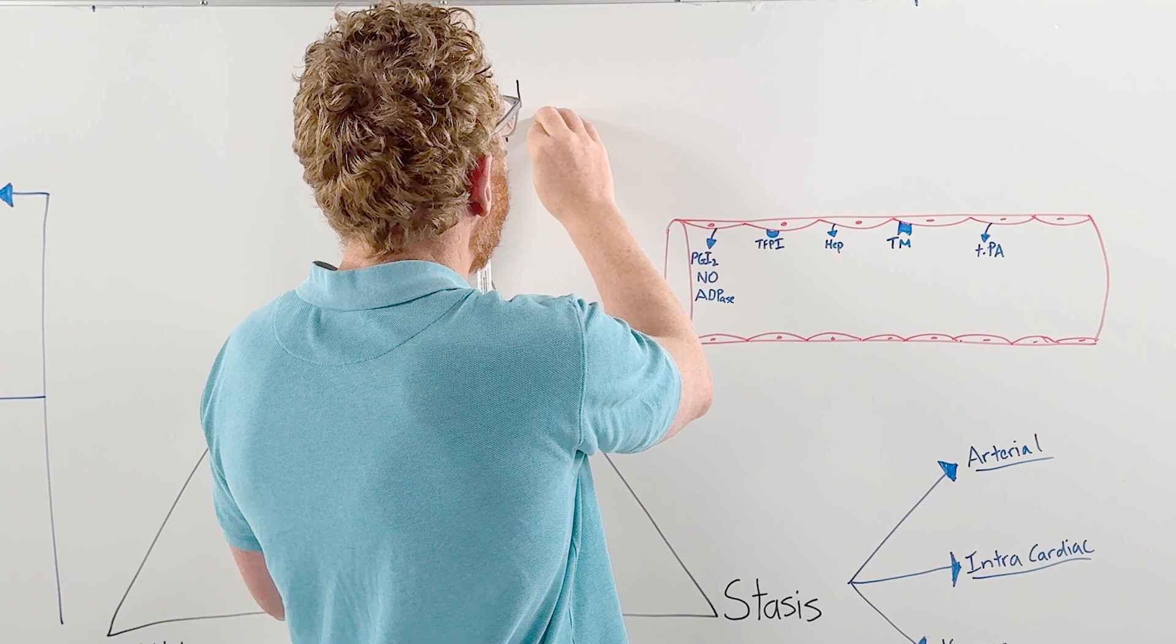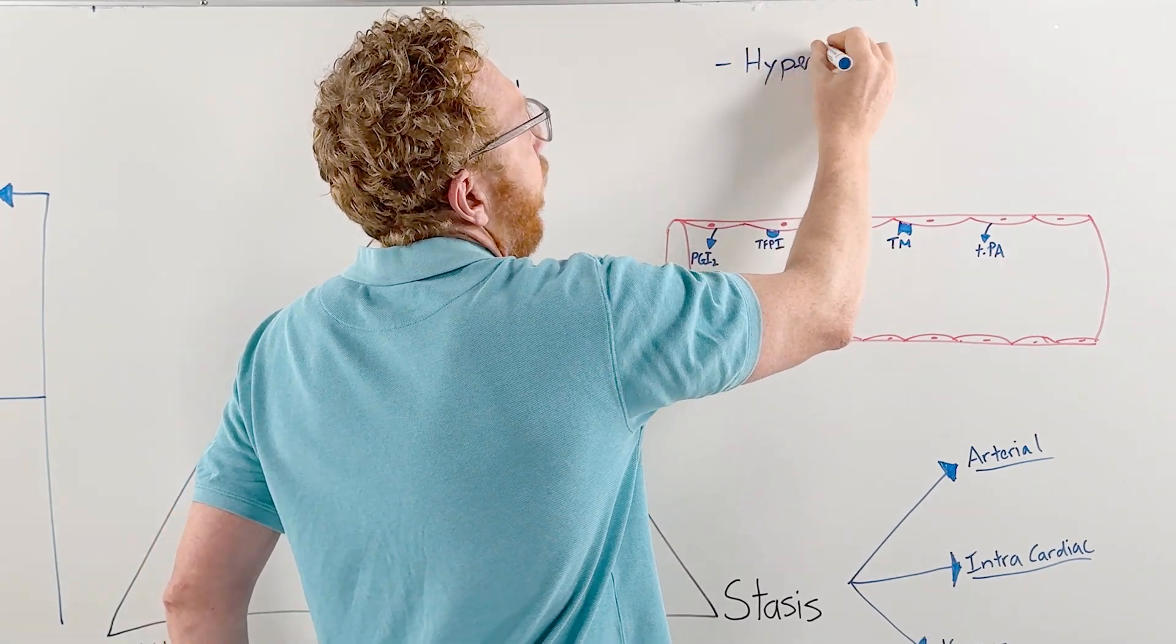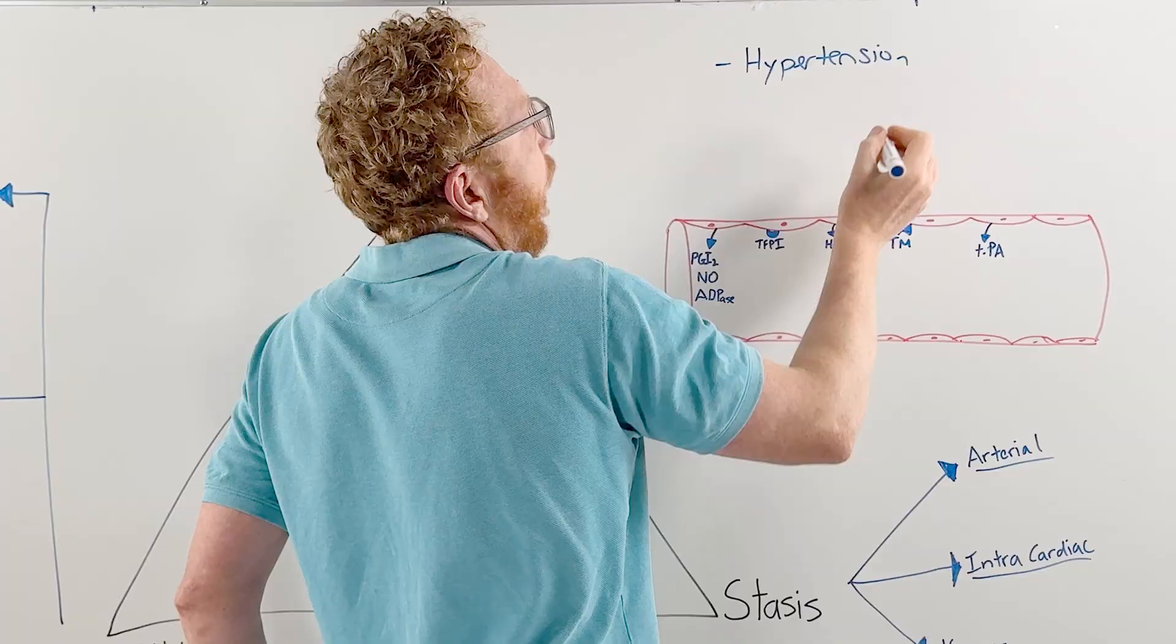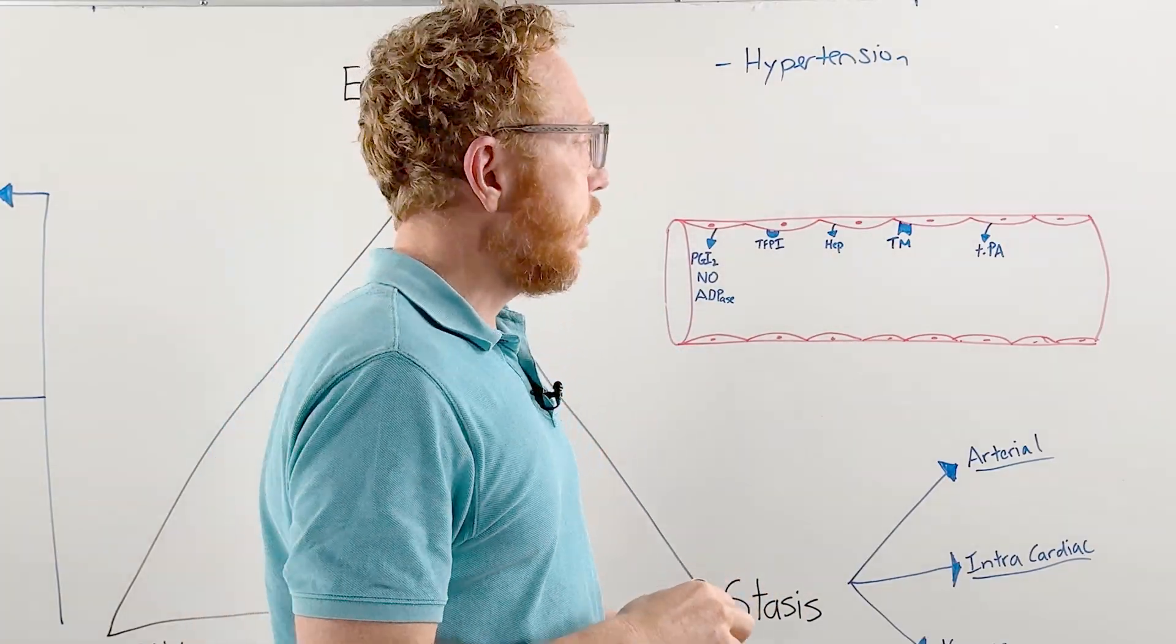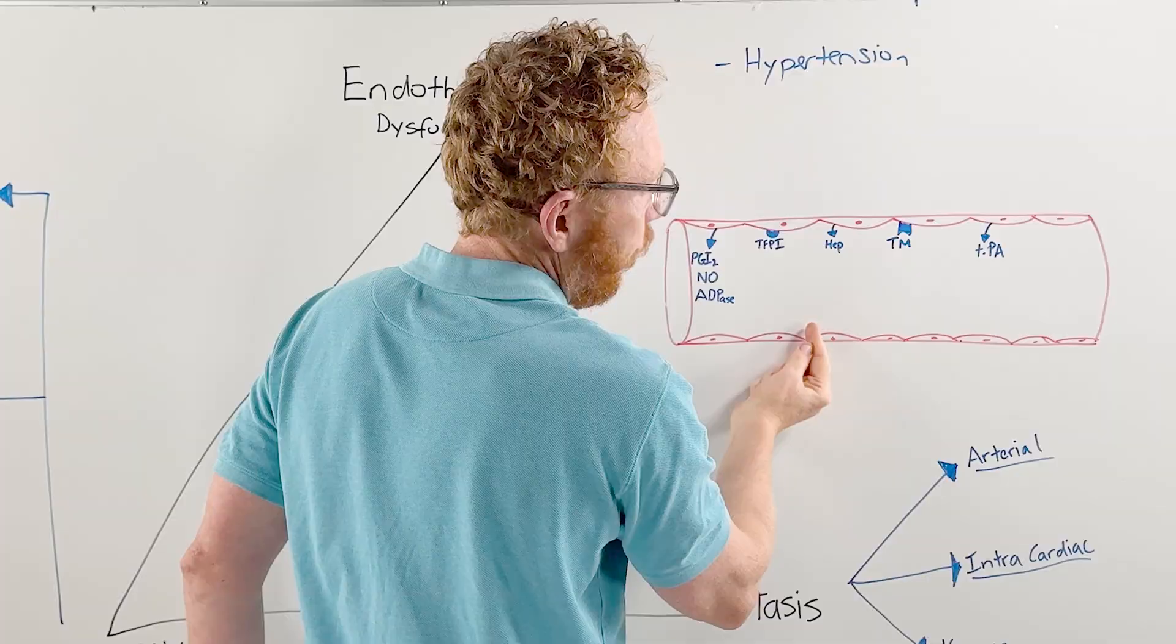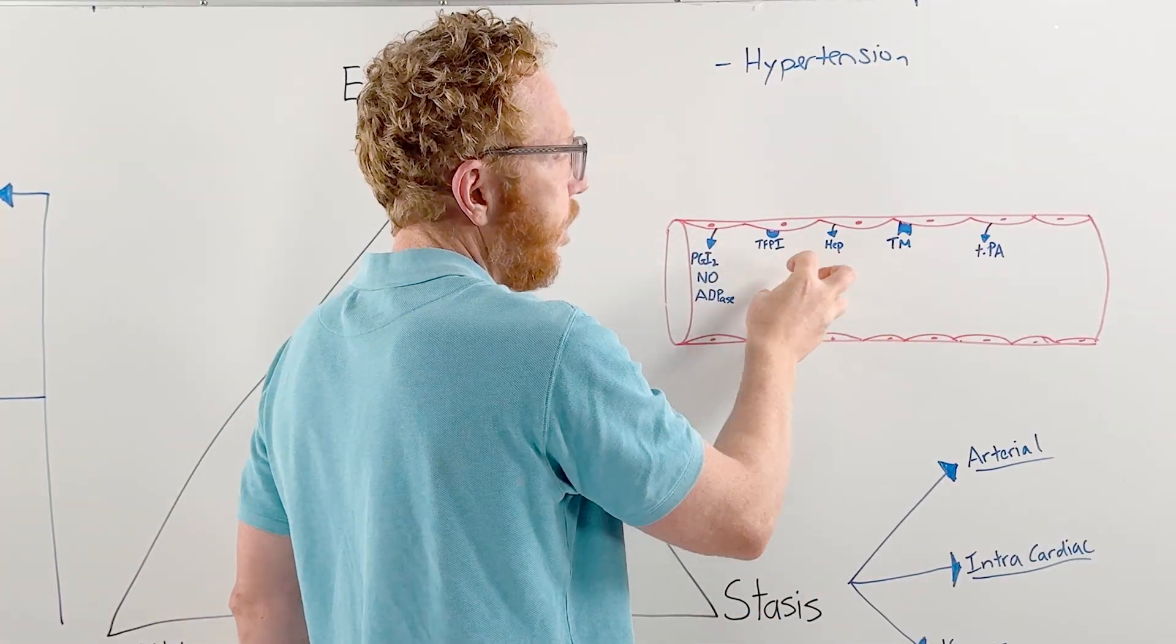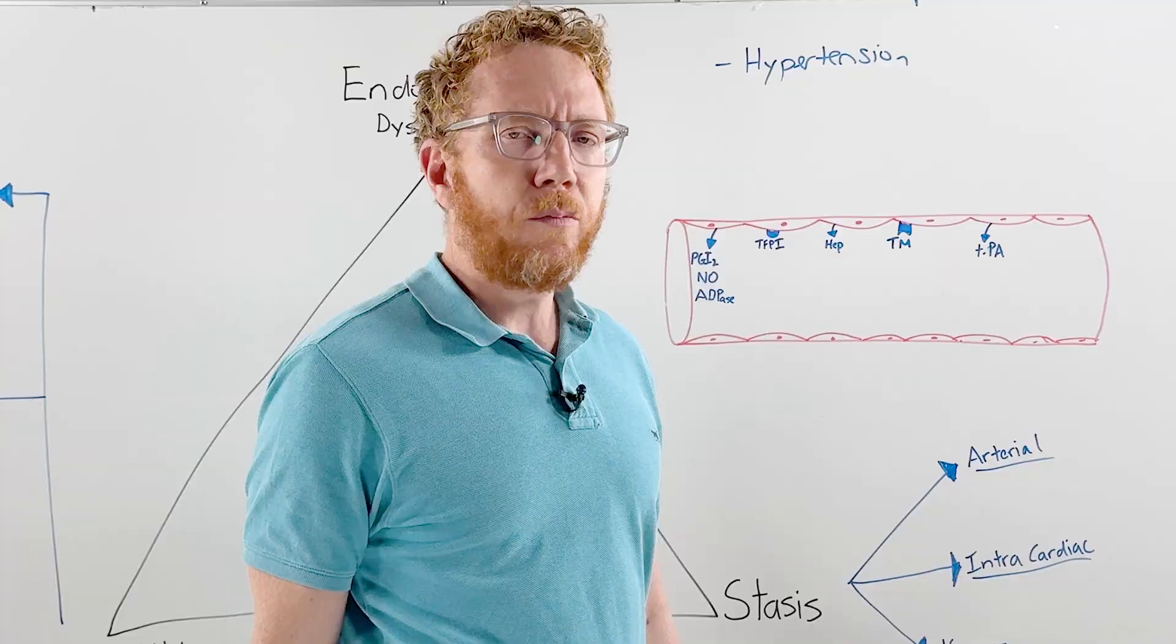What could cause dysfunction? One could be hypertension, which is more a factor with the arterial system. If high blood pressure is flying past, it causes injury to the endothelium and stops it producing these chemicals. Therefore, we start to see the possibility of clot forming.